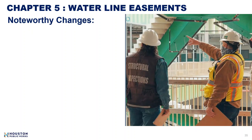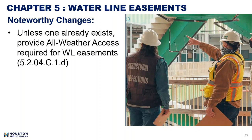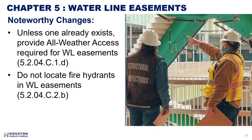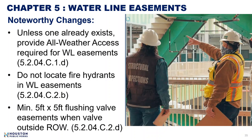More noteworthy changes: provide all-weather access for water line easements unless one already exists. For easements less than 10 feet, fire hydrants were not allowed previously; now fire hydrants must not be placed in any water line easements. Flushing valves must be centered within a 5-foot by 5-foot easement when the valve is located outside of the right-of-way. That concludes the changes made for the waterline section of Chapter 5.